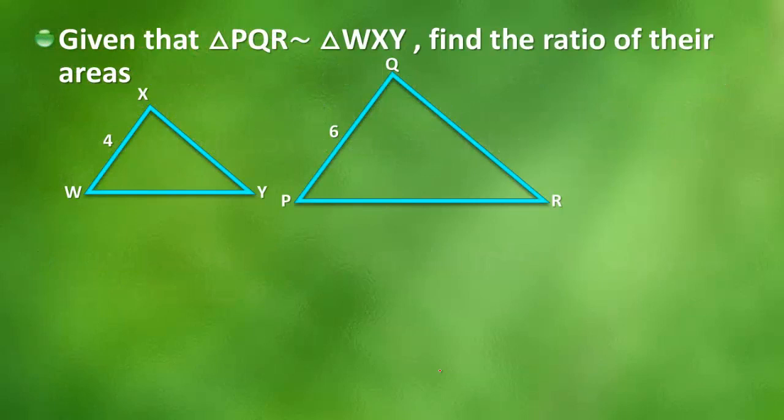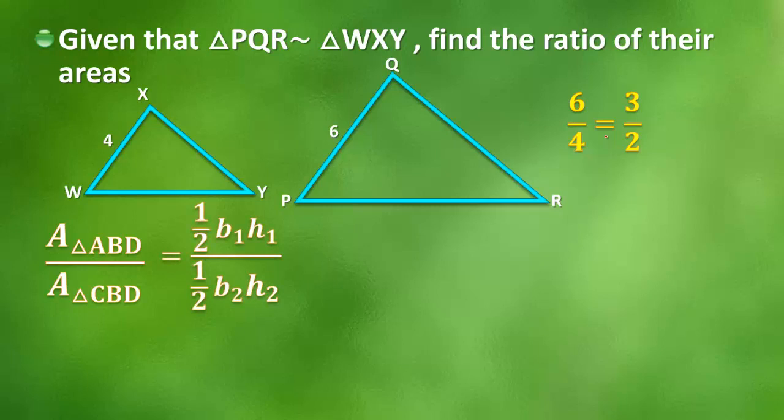So let's start with a problem. Given that triangle PQR is similar to triangle WXY, find the ratio of their areas. Now we're given that WX is 4 and PQ is 6. So we know that the ratio of their sides is 6 to 4, which reduces to 3 over 2. So let's go ahead and find their areas. Well, the ratio of their areas are the same. And the formulas are again, half the base of 1 times the height of 1, and then half the base of the other times the height of the other.